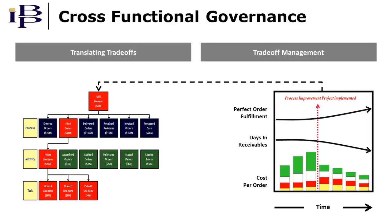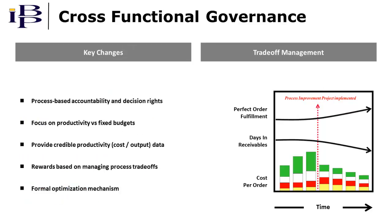Collectively, these capabilities provide the foundation for effective cross-functional governance. This is because they provide the basis for process-based accountability and decision rights. People can be held accountable for productivity targets versus fixed budgets because the data is credible and accurate. What's more, rewards can be based on managing trade-offs versus individual metrics. By doing so, it provides the basis for a formal optimization mechanism that ensures that one metric isn't being achieved at the expense of another.